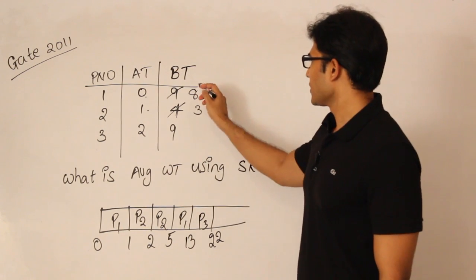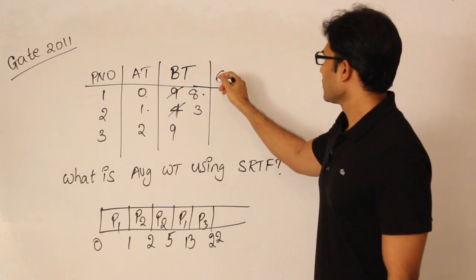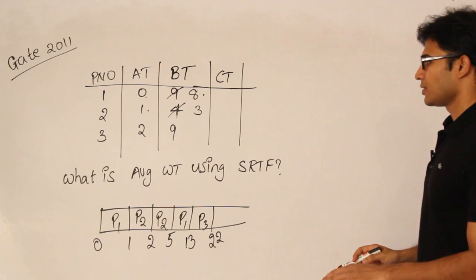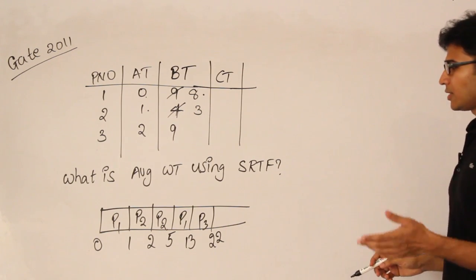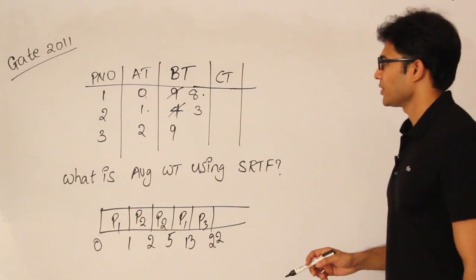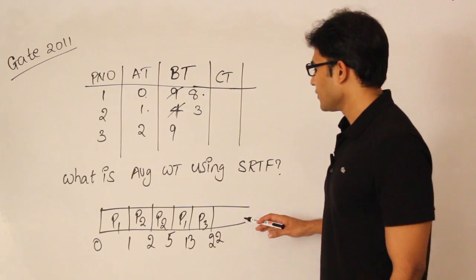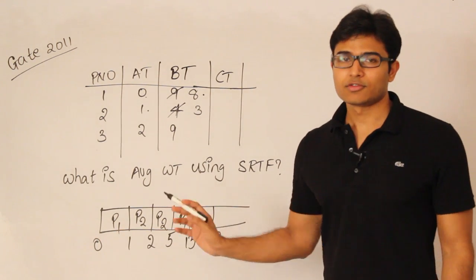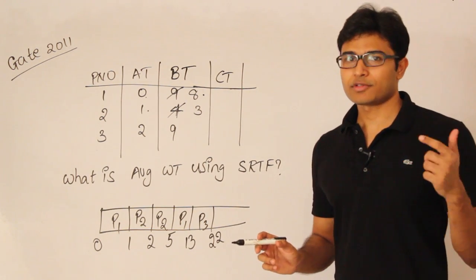Once you have finished, you can write the completion times. They are asking about the average waiting time, so we have to find the completion time, then the turnaround time, then the waiting time. For P1, you always find the completion time from the right end.